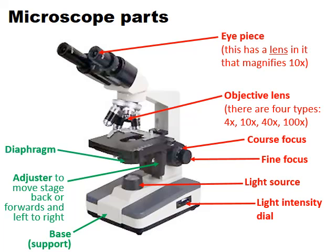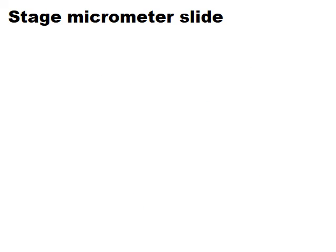The diaphragm beneath the stage allows us to modify the amount of light going through our sample — we can open or close it depending on how much light we want. The stage has a little clip on the side so that once we've placed our microscope slide onto the stage in the metal frame, we can clip it down to keep it firmly in position.